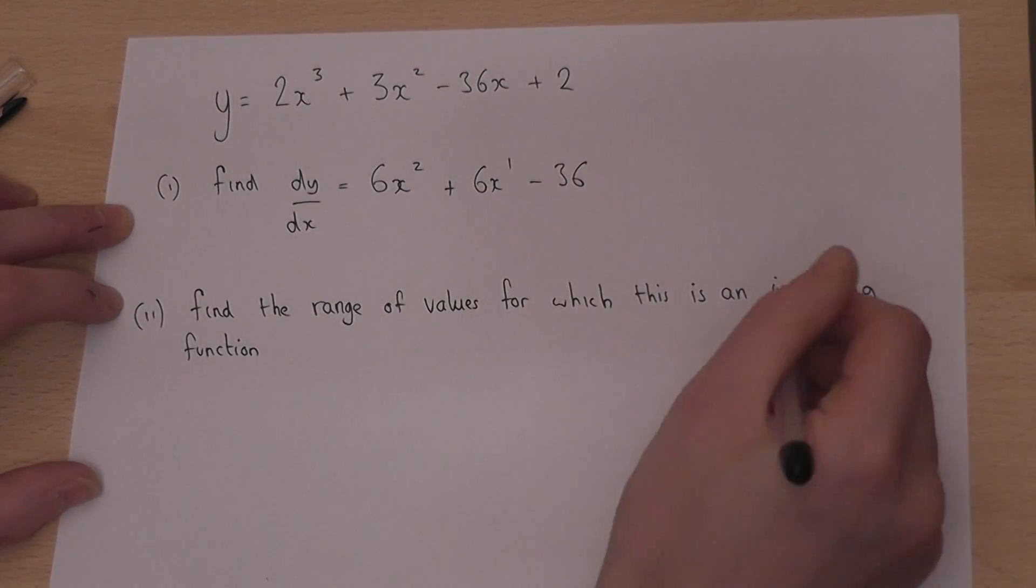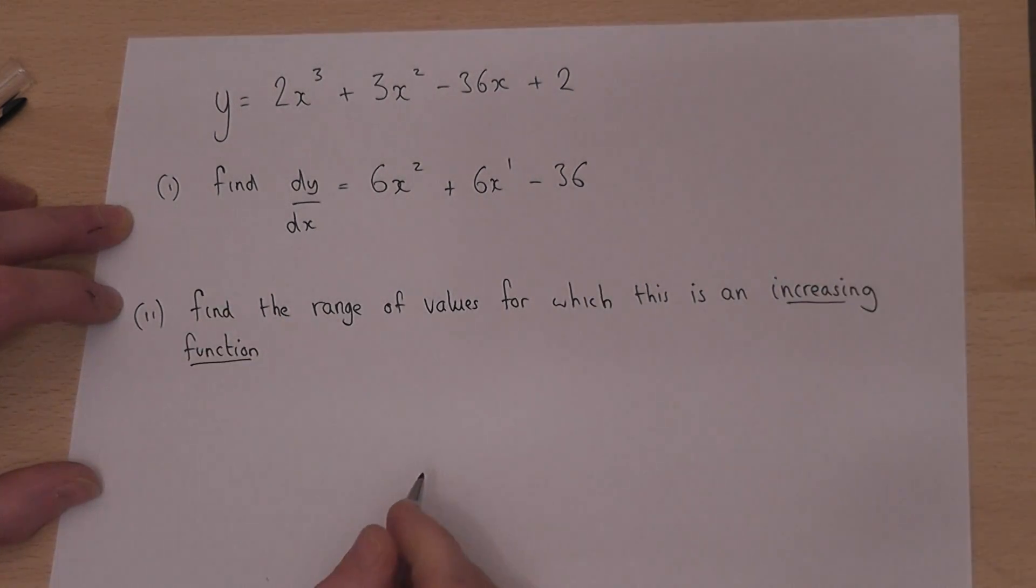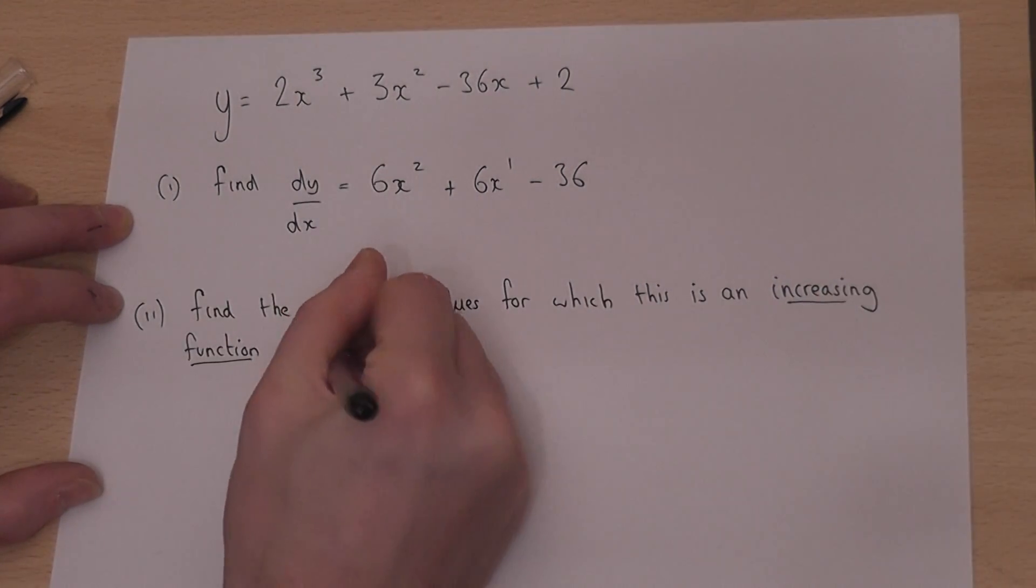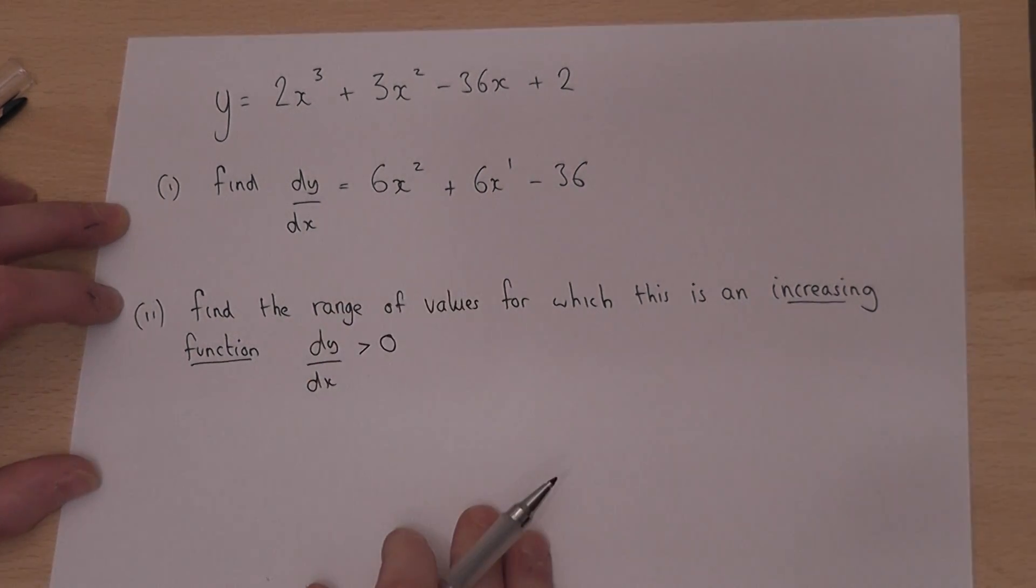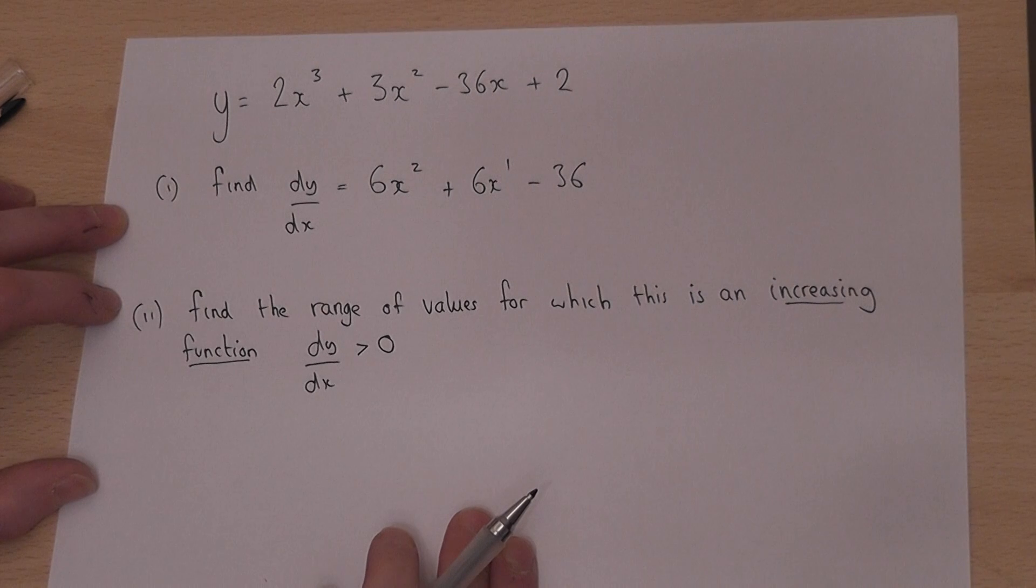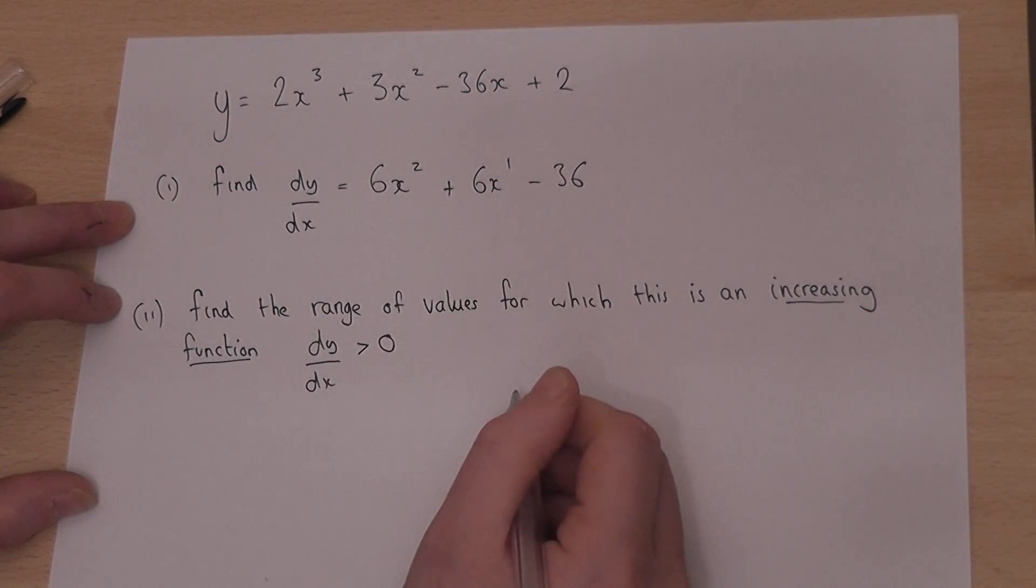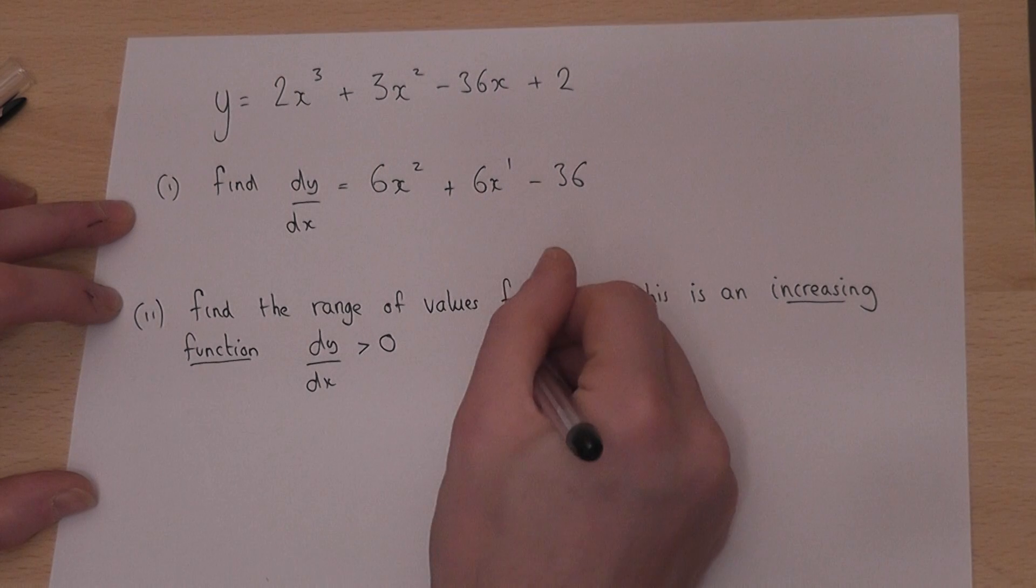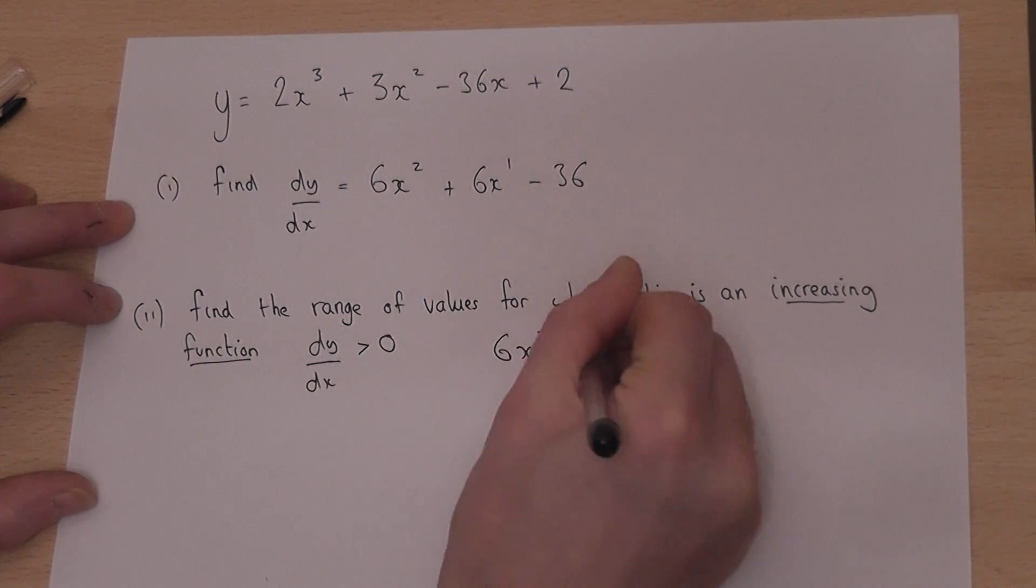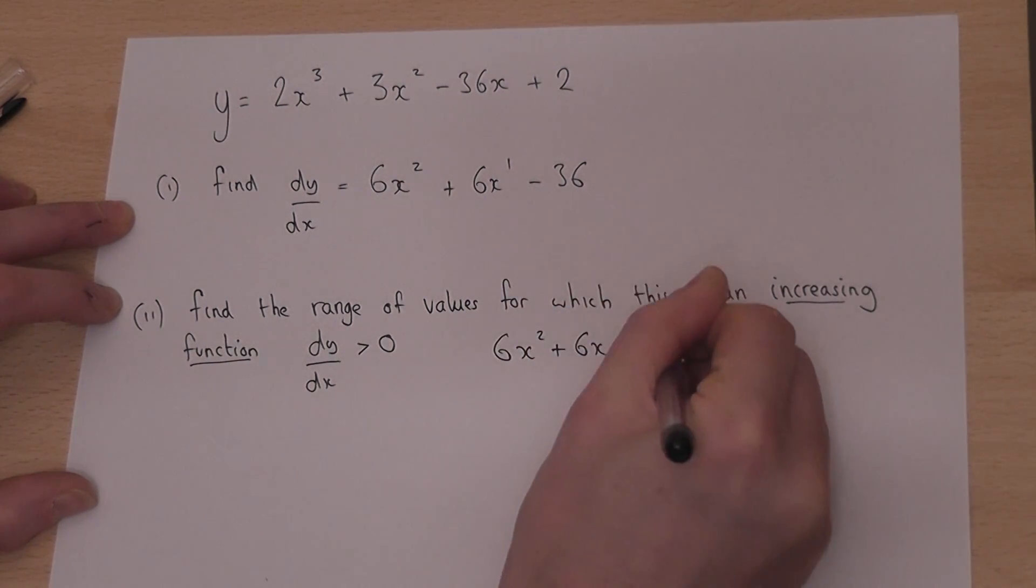Now, an increasing function is one where dy by dx is bigger than 0. So the question is, for what values of x is this function bigger than 0? So in other words, where is 6x squared plus 6x, take 36, bigger than 0?